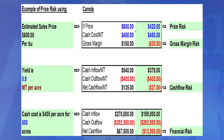In our second example using canola, going from $600.00 to $420.00 leads to a gross margin risk — a negative gross margin risk that leads to a cash flow risk and then eventually a financial risk.